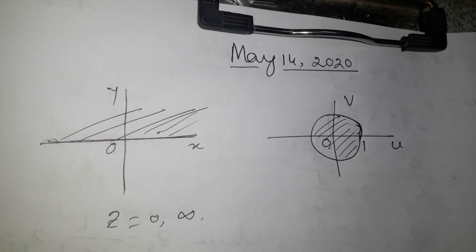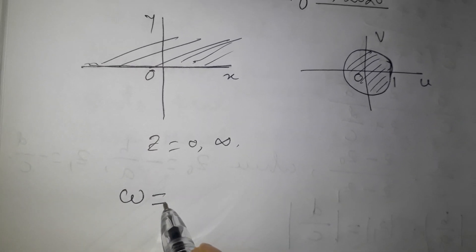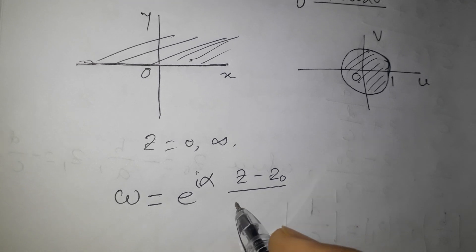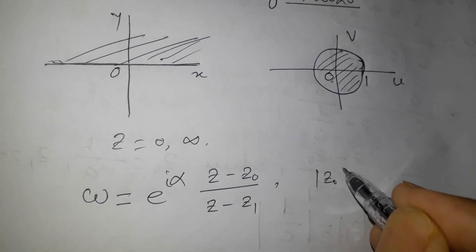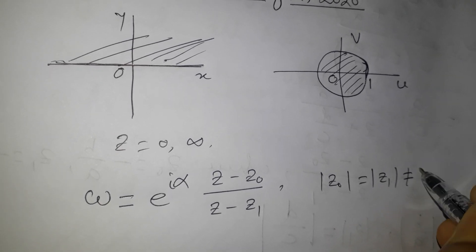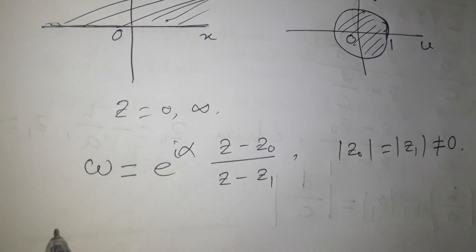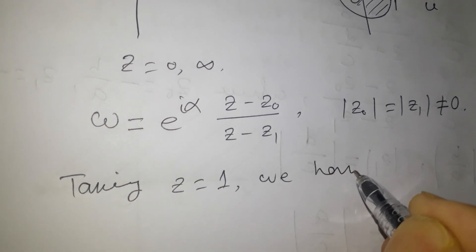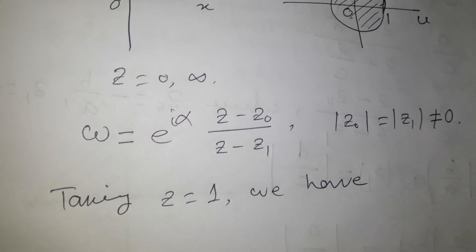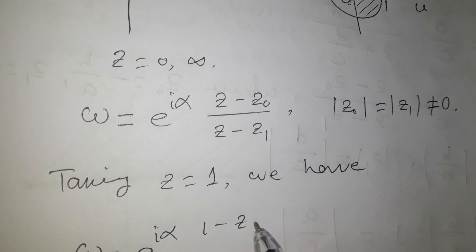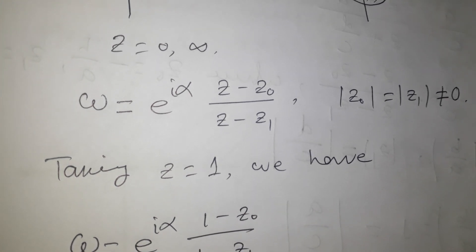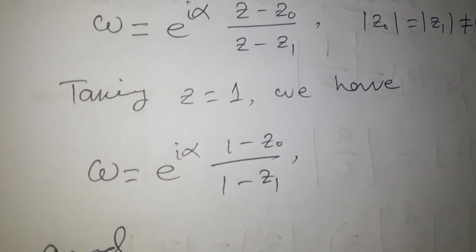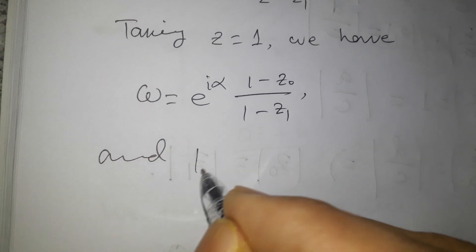So far we have derived that the Möbius transformation is of the form (z - z₀) / (z - z₁), where z₁ is not equal to zero. By taking z equal to one, the corresponding w point is e^(iα) times (1 - z₀) / (1 - z₁). This should be transformed to a point on the unit circle, so |w| = 1.